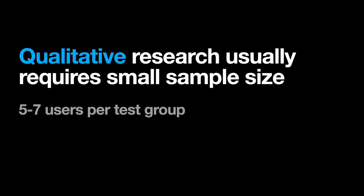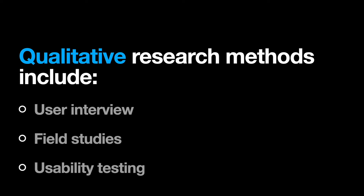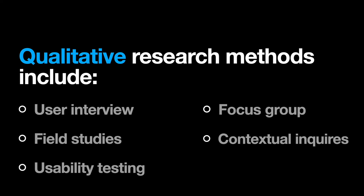Qualitative research requires fewer respondents to understand the nature of the problem. Five to seven users per test group is often enough. Qualitative research methods include user interviews, field studies, usability testing, focus groups, and contextual inquiries.